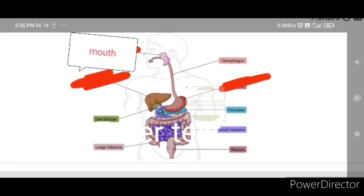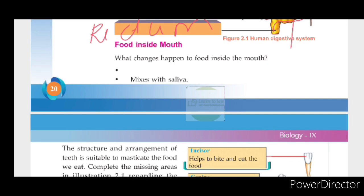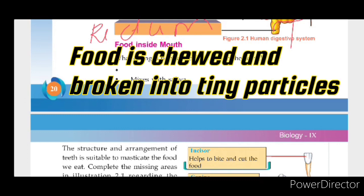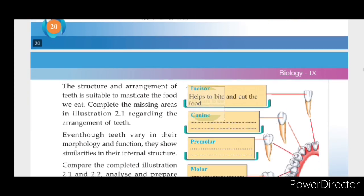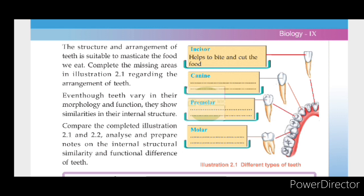What changes happen to food inside the mouth? The food is chewed into small particles. We also mix it with saliva. In the mouth, we have different types of teeth: incisors, canines, premolars, and molars.